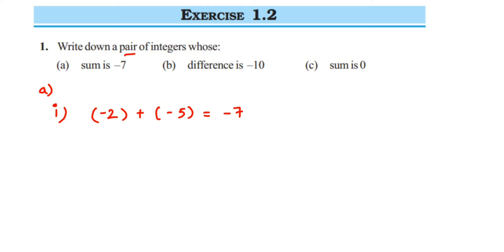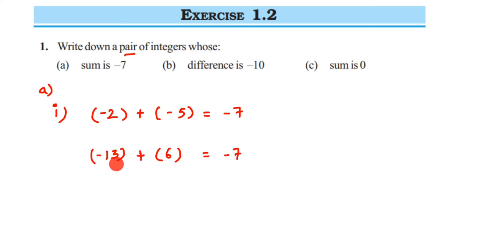For the second example, we want minus 7 as the answer using one negative and one positive. Take minus 13 and plus 6. When adding integers with different signs, you subtract them: 13 minus 6 equals 7. Then put the sign of the greater number — 13 is greater and it's negative, so the answer is minus 7. That's why the greater number must carry the negative sign.